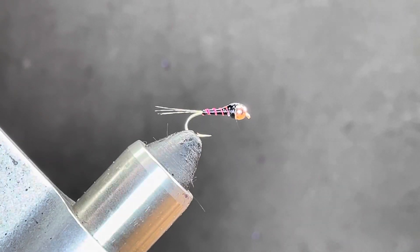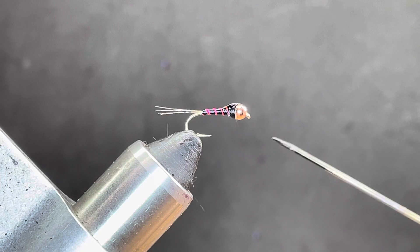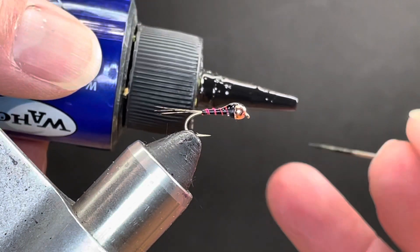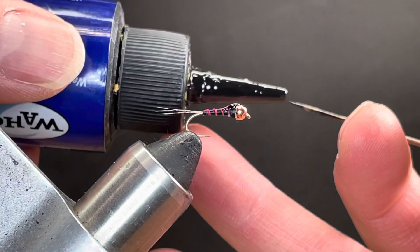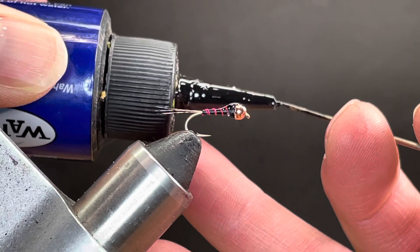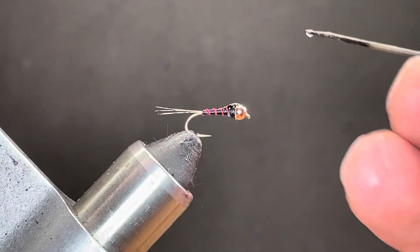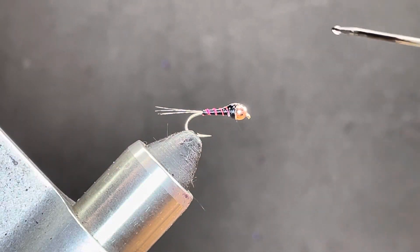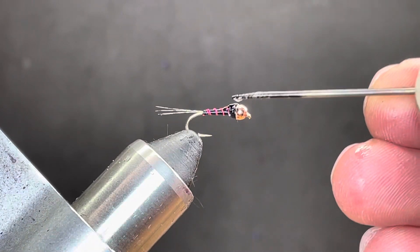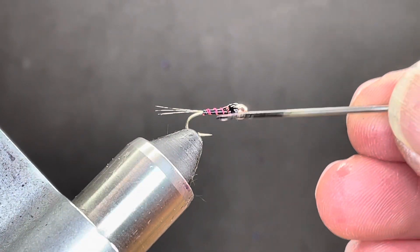So now I've got this little bubble back. Then I'll take a cleaned off bodkin. And I'll just start working it around.